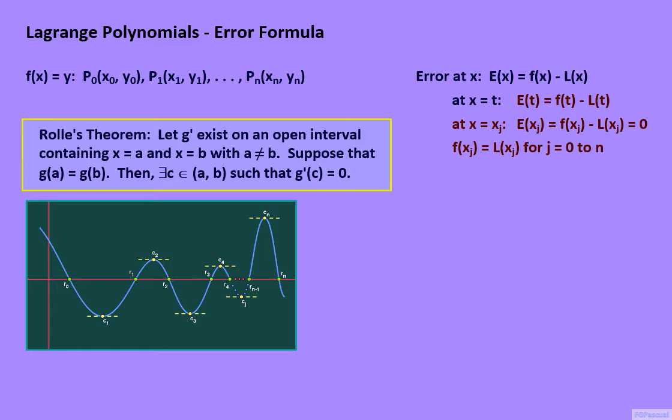So how do we use Rolle's theorem to derive the formula for the error function? We define a function g(x) to be equal to f(x) minus the Lagrange polynomial function L(x), and then we subtract a complicated expression which is made up of E(t) times a fraction whose numerator is the product of the quantities (x - x₀)(x - x₁)...(x - xₙ). The denominator is made up of the product of the quantities (t - x₀)(t - x₁)...(t - xₙ). Here, the value t should be different from xⱼ for j equals 0 to n.